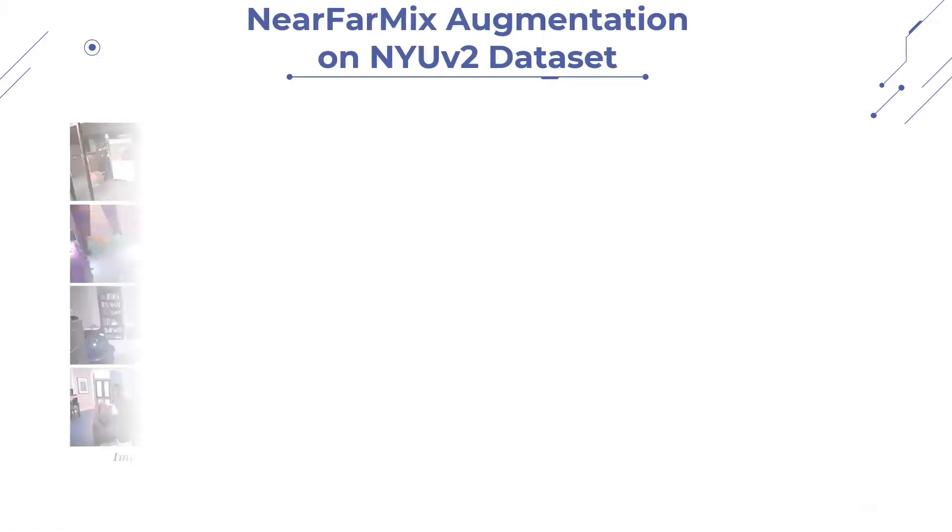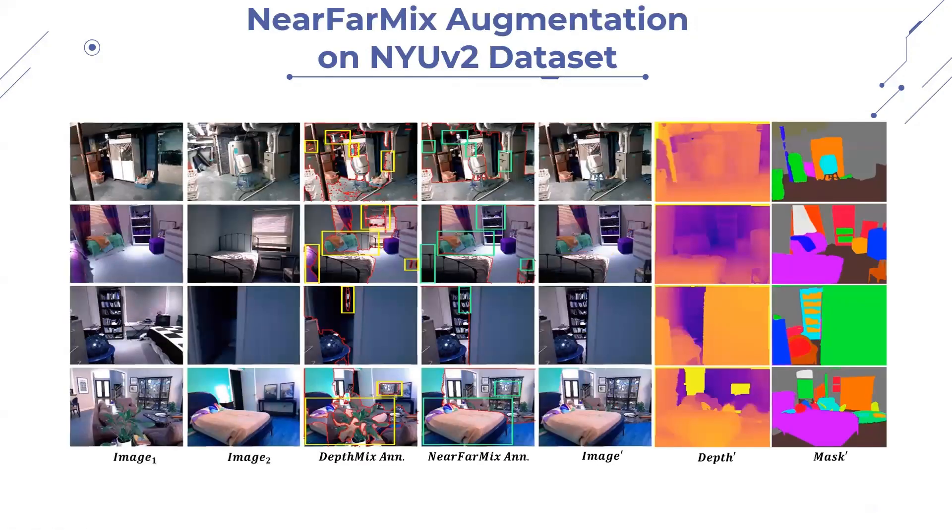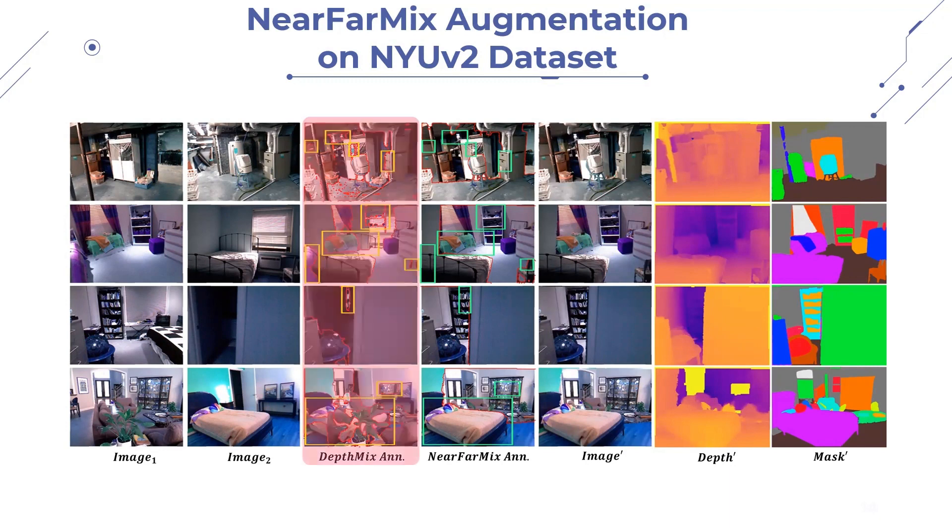Let's see some samples from our proposed NearFarMix augmentation on the NYU v2 dataset. In these images, rectangular boxes emphasize the regions of interest. We can clearly notice that DepthMix augmented images compromise object integrity and cannot produce diverse and controlled samples. On the other hand, our method shows its immunity to object integrity loss, and also due to its threshold parameter, it can generate both diverse and controlled samples.